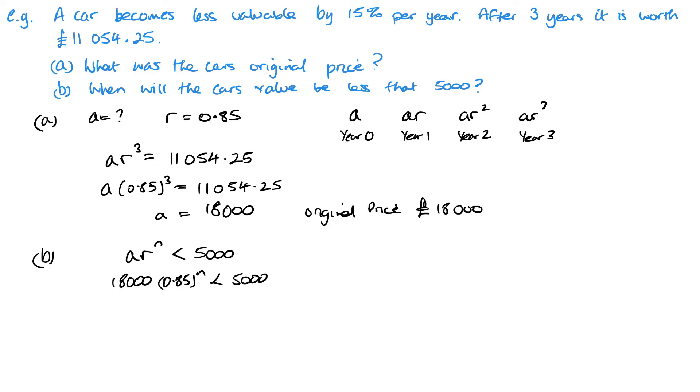So first we want to divide by that 18,000, and that's going to give me 5 over 18. Now I want to take logs on both sides. So we've got log 0.85 to the power n is less than log 5 over 18. And what I want to do is I want to move this n down here, so we're actually getting rid of it from there and popping it there.